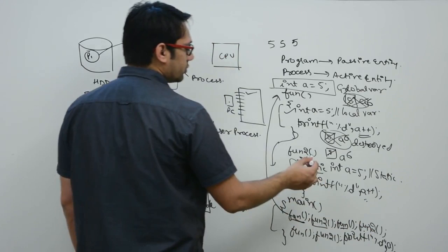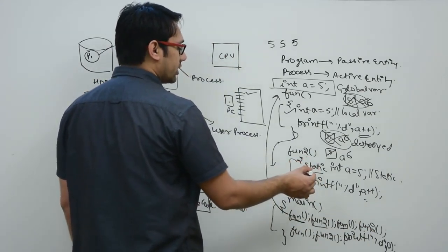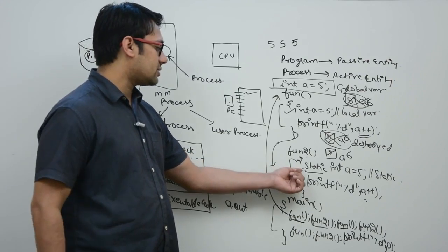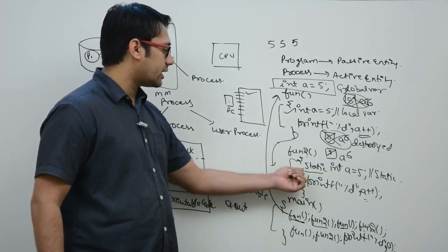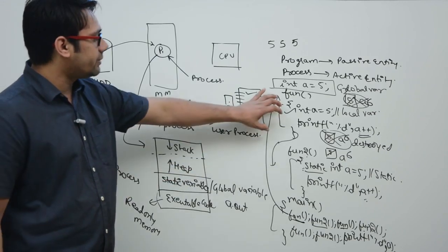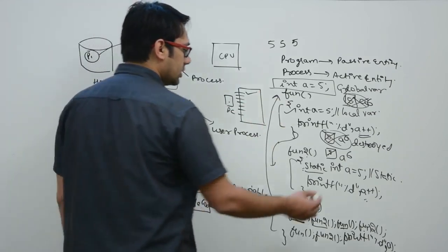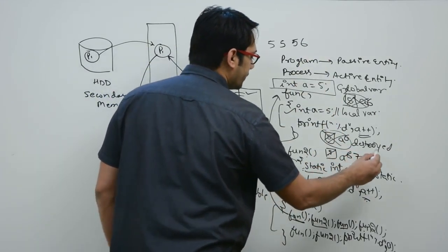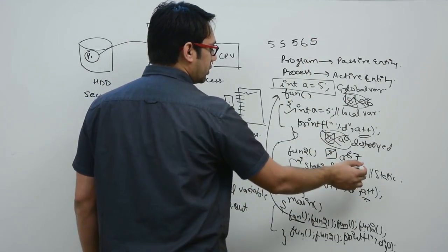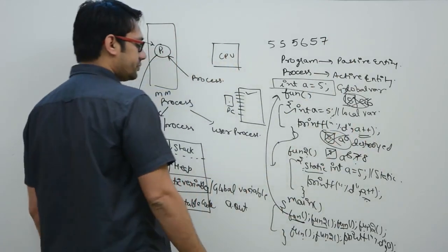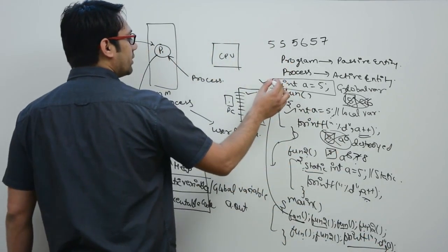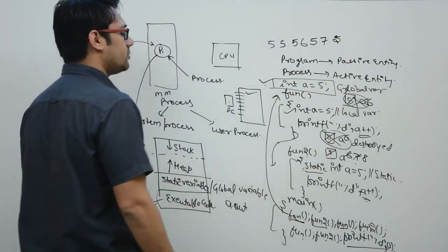When fun2 is called again, the static variable is not re-initialized — static variables are initialized only once. So it still holds the value 6 from the previous call, prints 6, and increments to 7. Each subsequent call to fun2 continues from where it left off: fun2 prints 7 and increments to 8. The global variable `a` remains 5 throughout, printed after all function calls.